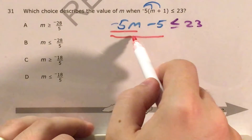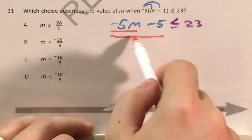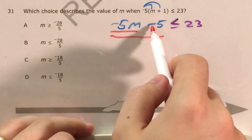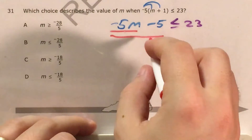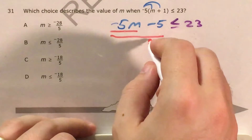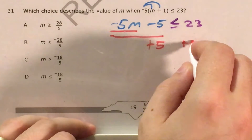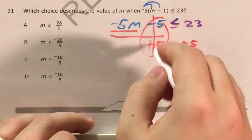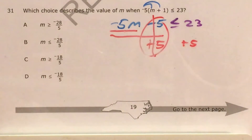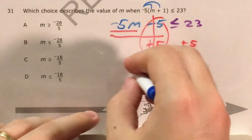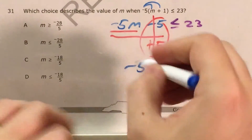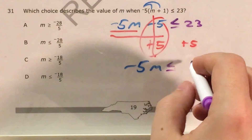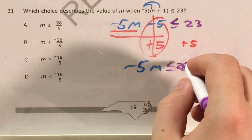Either way, we're going to have to take off our shoes first before we take off our socks. Shoes represent this minus 5 that's on the end, so we need to get rid of minus 5 first. The opposite of minus 5 is plus 5 — minus 5 and plus 5 go away, and 23 plus 5 gives me 28. So I know that negative 5 times some number has to be less than or equal to 28.